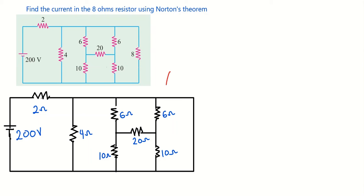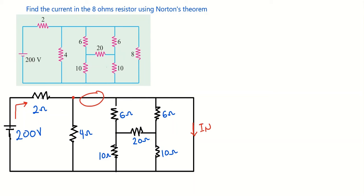Looking at this circuit, we don't have the 8-ohm here. What you have to find is the current that will be flowing through where the 8-ohm resistor was — that current will be Norton's current. The current coming from the voltage source will pass through the 2-ohm resistor, and when it gets to this node, because there is no resistor here but there is a resistor here, the current will take this direction.